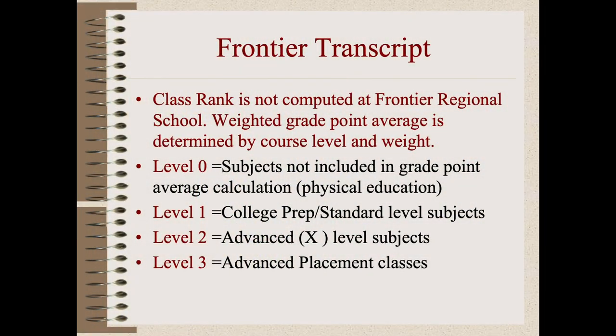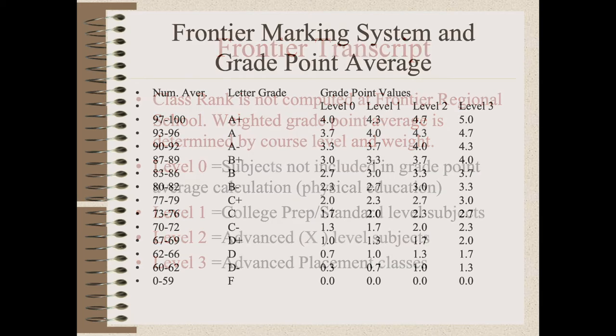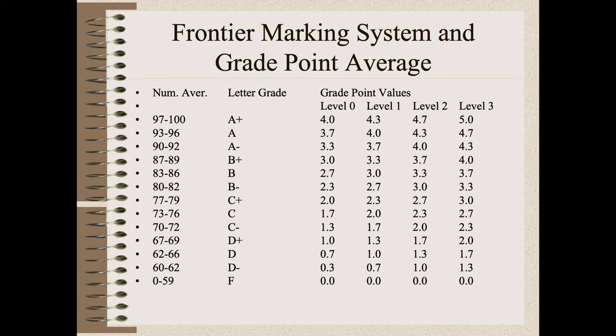We don't compute individual class rank, but weighted GPA reported by decile is determined by course level. If you earn a B in a regular level-one college preparatory class, that's a 3.0. At the honors level, you add an additional 0.3 points to the GPA, and AP adds 0.7.